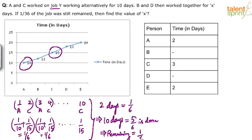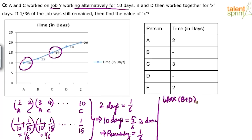After A and C worked for 10 days, B and D then work for x days. 1/36 of the job was still remaining — find the value of x. So 5/6 is done, 1/6 is remaining. Now B and D have worked together, and after working for x days 1/36 is still remaining. The work done by B and D is therefore 1/6 minus 1/36.